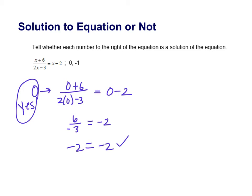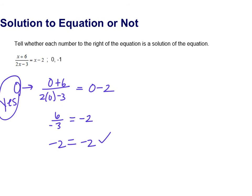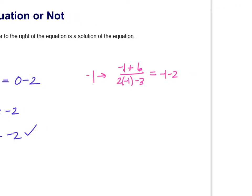We're going to do the same thing with the negative 1. I'll go ahead and write it over here. So let's plug in negative 1 and see if we get the left side to equal the right side. So negative 1 plus 6 over 2 times negative 1 minus 3. Does that equal a negative 1 minus 2? All right, now let's simplify this.